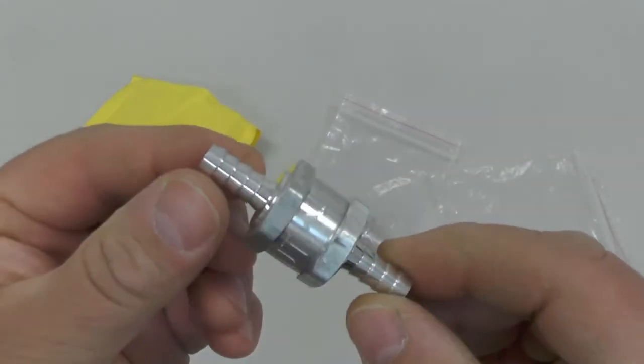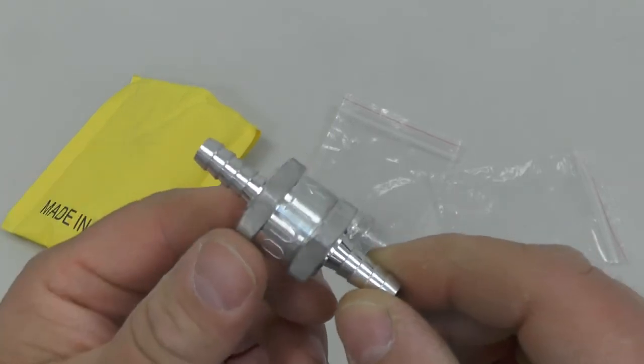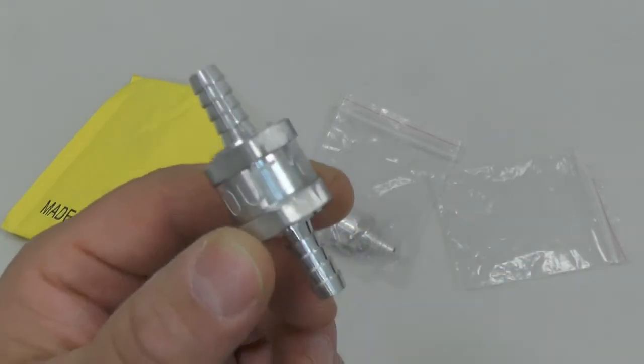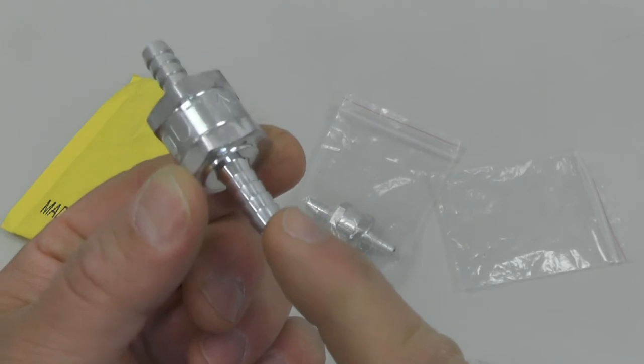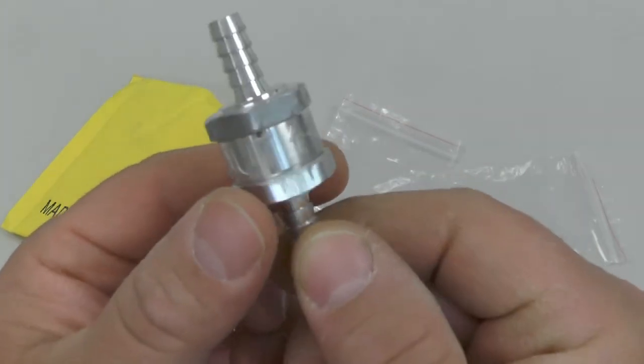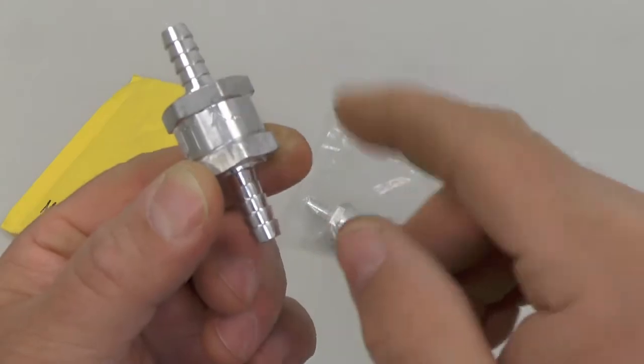Basically the way these work is there's a little diaphragm inside that only lets the fuel flow in one direction. If you want to test this you can blow into one end of the tube, and if you blow in the direction of the arrow you'll be able to blow air through to the other side.